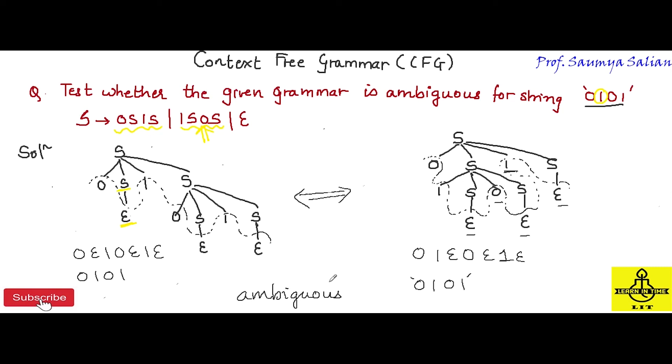So the given grammar is ambiguous. I constructed two different parse trees for the string 0, 1, 0, 1, confirming that the grammar is ambiguous.